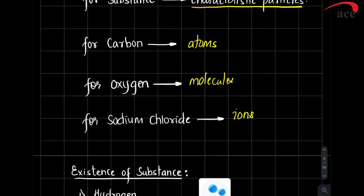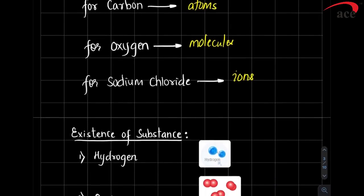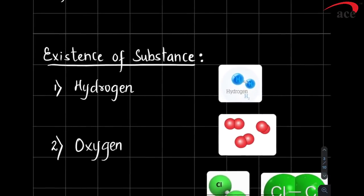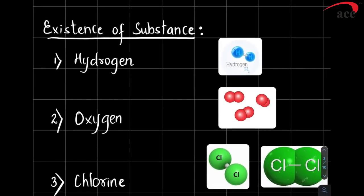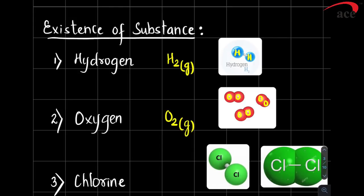To understand particle types, we look at the existence of substances. Hydrogen exists as H₂ molecule — hydrogen gas. Oxygen exists as O₂ — two atoms present as one unit — oxygen gas. Chlorine also exists as Cl₂ molecule. The more accurate representation shows two atoms together rather than a stick bond, though the stick representation is used to illustrate bond length.